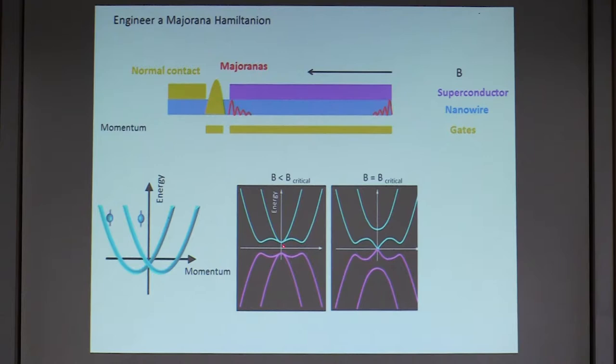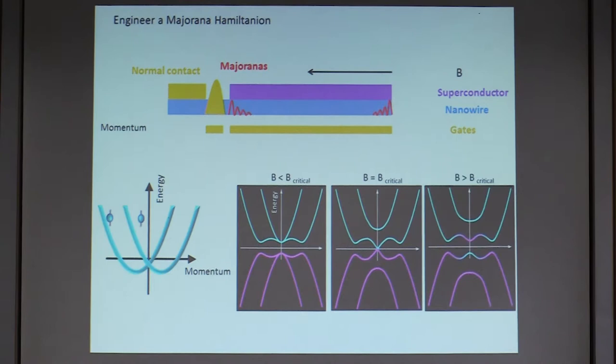The lower blue band moves down and the upper blue band moves up. As the magnetic field keeps increasing, these two bands touch each other. At zero Tesla there is a gap at the Fermi energy, but now that gap closes. If you continue to increase the magnetic field, the gap reopens — this is what we call the topological gap. It's an inverted gap, meaning the gap is now negative.